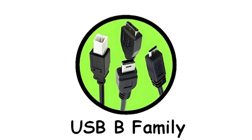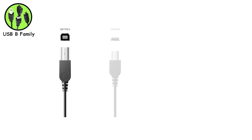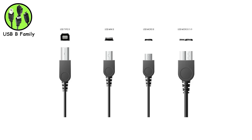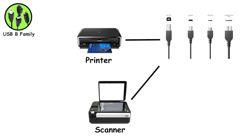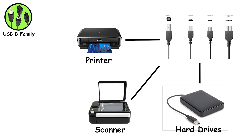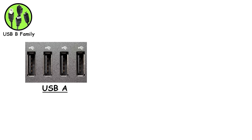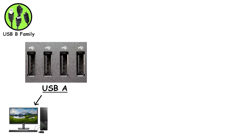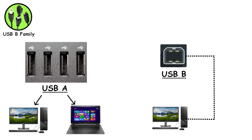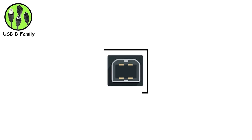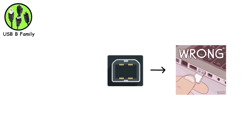The USB-B family is the chunkier side of USB connectors, mostly found on peripherals like printers, scanners, and external hard drives. Unlike USB-A, which is the standard port on computers and laptops, USB-B is designed for the devices that connect to your computer. Its squarish, almost boxy shape with beveled corners makes it obvious which way it goes — you can't plug it in the wrong port by accident.